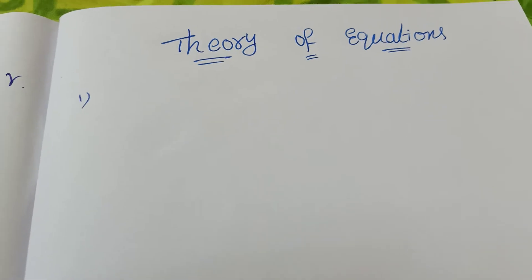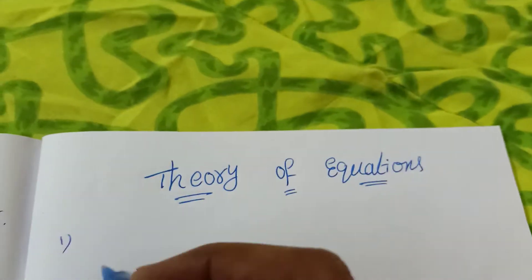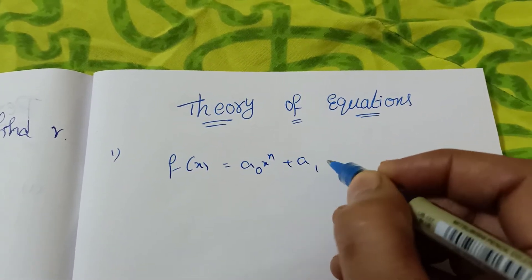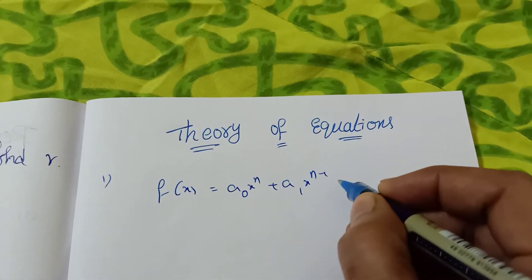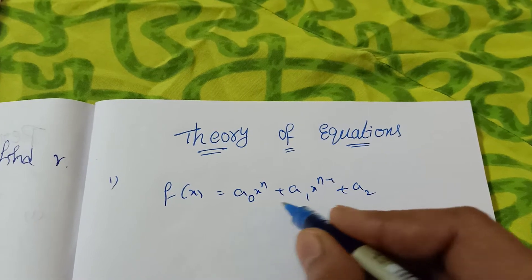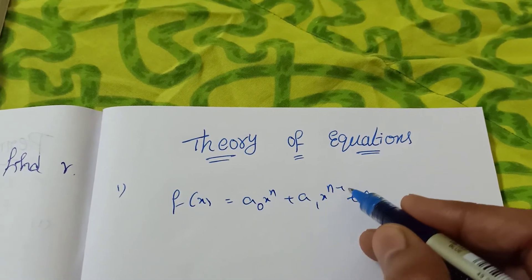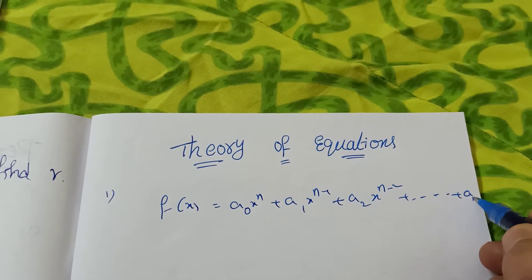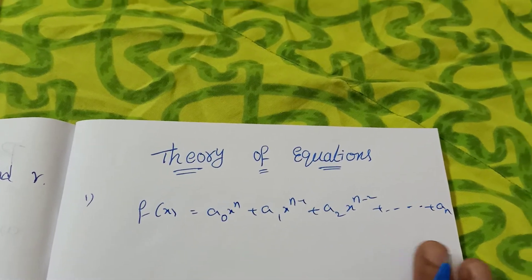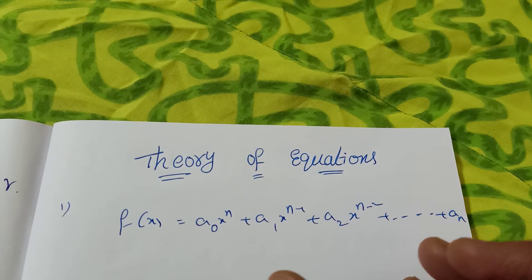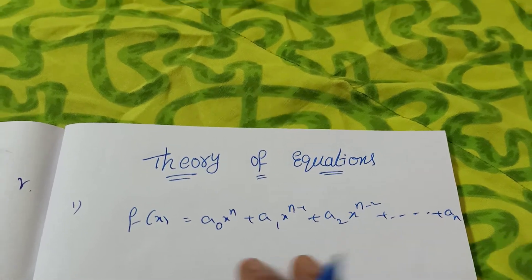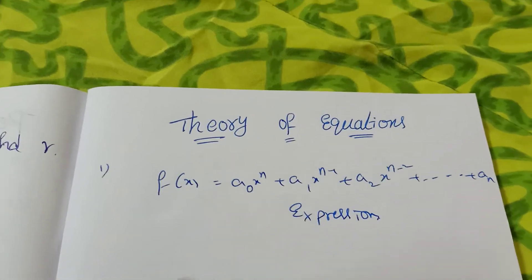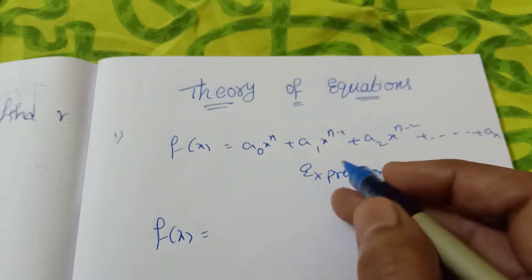Yes, come to the point. The general form is f(x) = a₀xⁿ + a₁xⁿ⁻¹ + a₂xⁿ⁻² — see the suffixes a₀, a₁, a₂ — and so on up to aₙ. This is called an expression. Expression means only the terms are given — no equal, less than, or greater than symbols. That is called a polynomial expression.